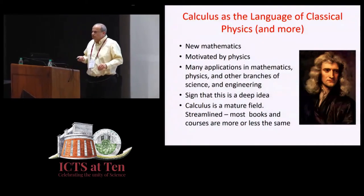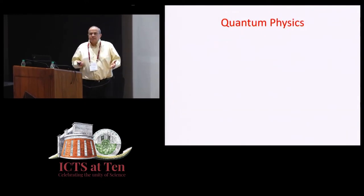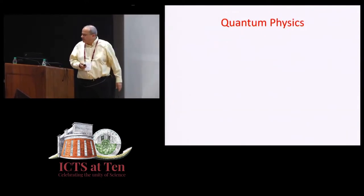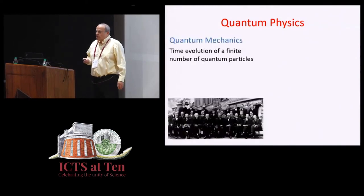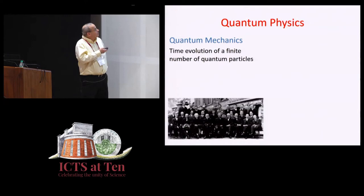So, so much for classical physics, let me move to quantum physics. And just as in classical mechanics we had classical mechanics and then classical field theory, here we start with quantum mechanics. And very much like in classical mechanics we have a finite number of degrees of freedom, except that here these are quantum particles.